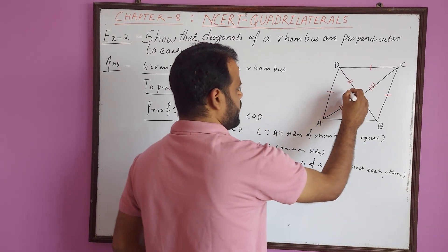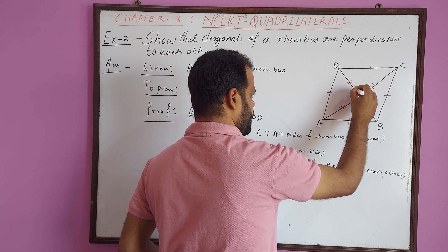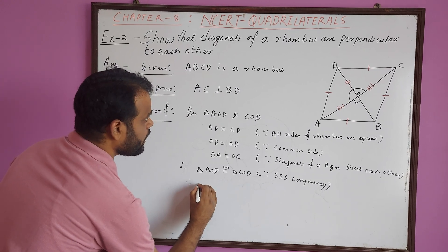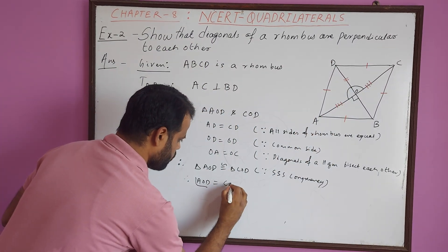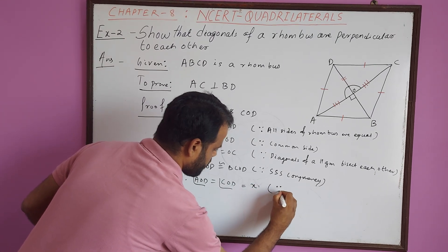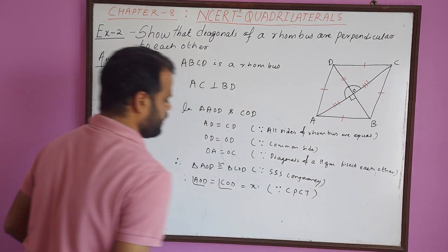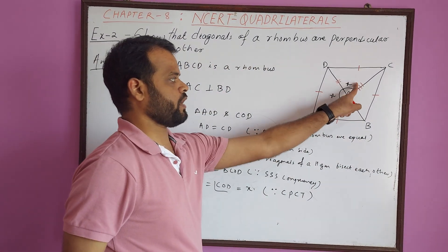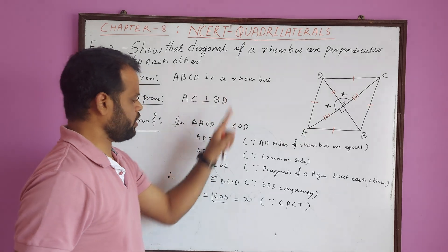As a result, angle AOD equals angle COD — let us call this X — because corresponding parts of congruent triangles are equal. Now X and X are forming a linear pair, so 2X equals 180 degrees, which gives X equals 90 degrees. Hence it is proved.